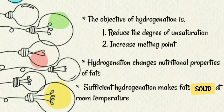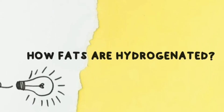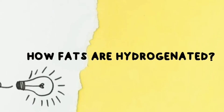So the objective of hydrogenation is to reduce the degree of unsaturation of fats and also to increase its melting point. Hydrogenation also causes changes in the nutritional properties of fats, and sufficient hydrogenation makes the fat solid at room temperature.